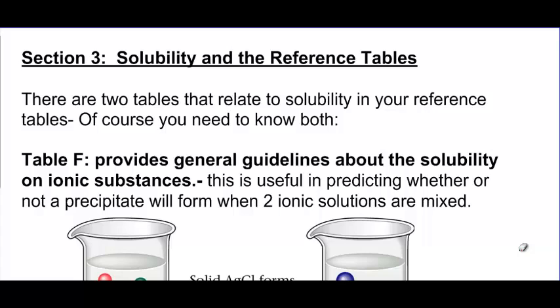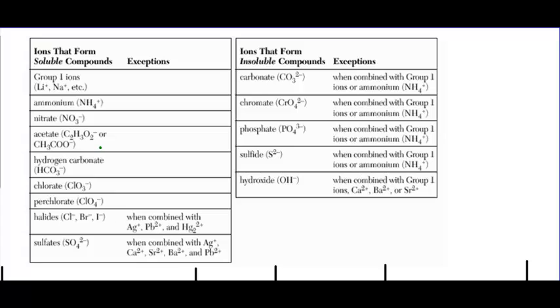So the first reference table that we deal with in this unit is reference table F. And reference table F is kind of like a yes or no type of table. It tells us if an ionic compound will or will not dissolve in water. So reference table F is really a couple tables in one. It looks like this.